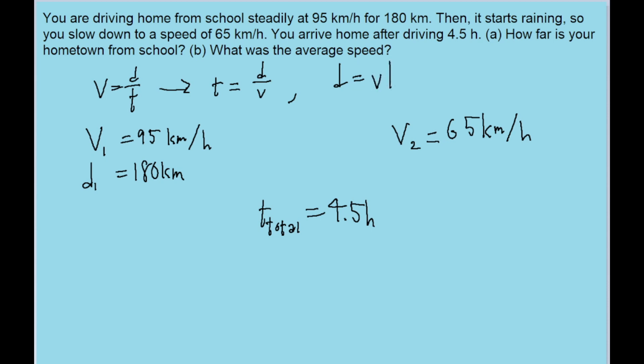So first let's figure out the amount of time we spend in phase one. So using this time equation right here, taking d over v, dividing 180 kilometers by 95 kilometers per hour, we find a time, t1, of about 1.895 hours.